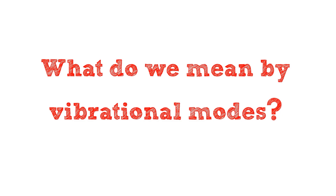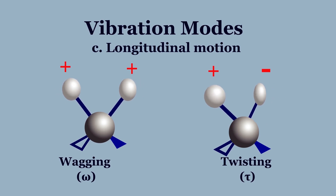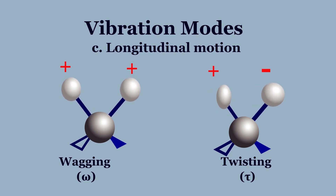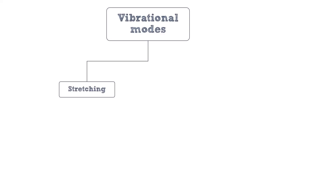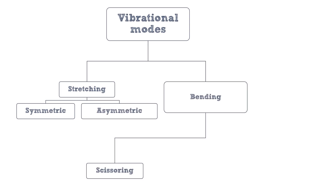There are six vibrational modes. Vibrational modes refer to the ways the bonds vibrate in a molecule. There are six vibrational modes: two stretching modes — symmetric and asymmetric — and four bending modes — scissoring, rocking, wagging, and twisting.